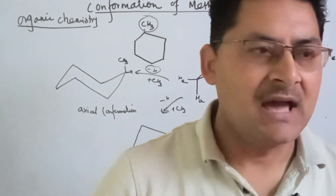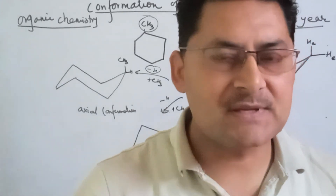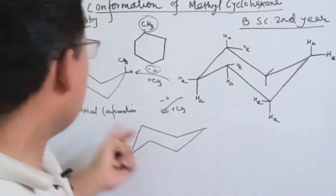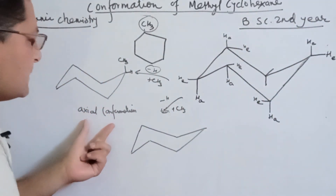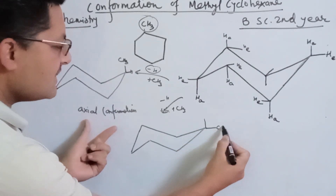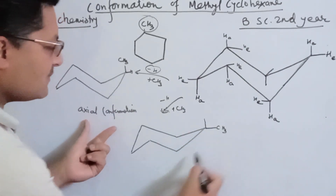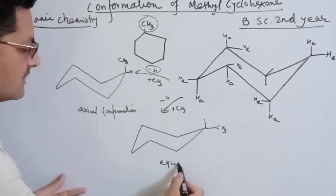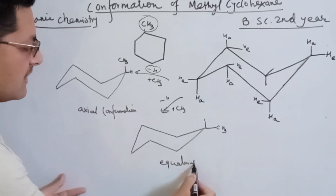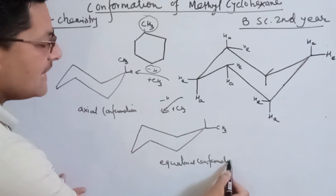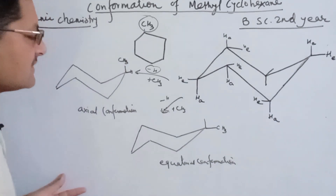So the bonds here — I am going to have axial conformation, and I am going to have a CH3 group in the equatorial position. This is the equatorial conformation of methylcyclohexane. I am going to have two conformations of methylcyclohexane.